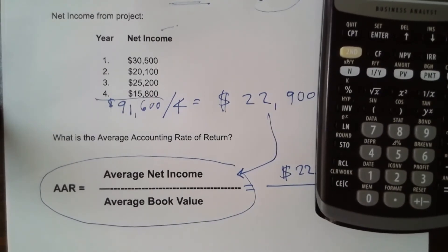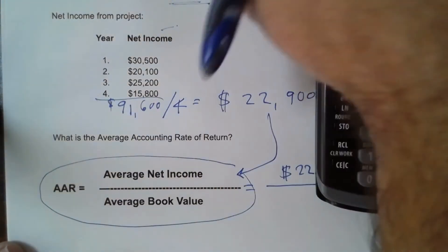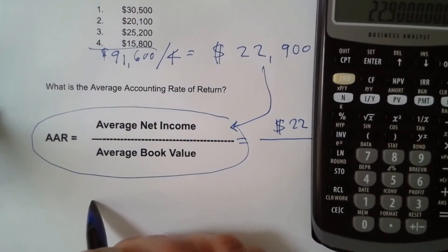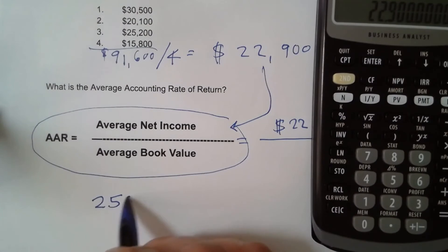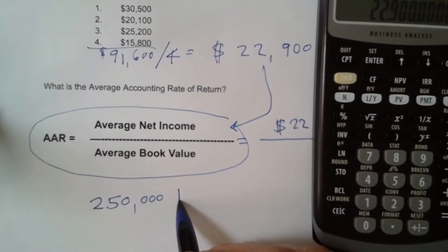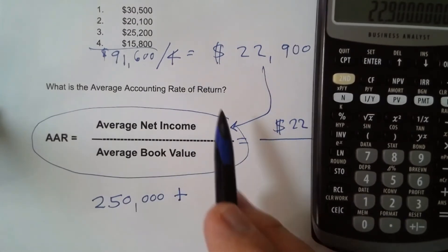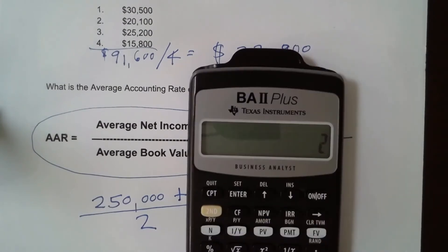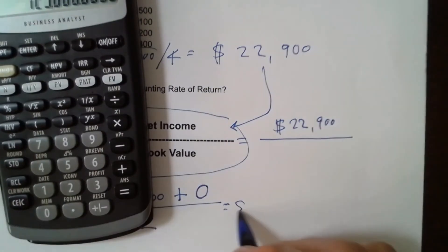To find the average book value, we have the starting book value. The starting book value is going to be the price we paid for the equipment, $250,000. We add to it the ending book value which because of its zero salvage value is going to be zero. And we divide it by two because we're finding the average. So essentially, we have $250,000 divided by two and that is $125,000.